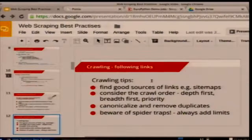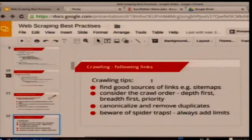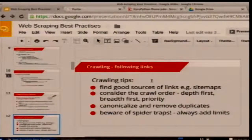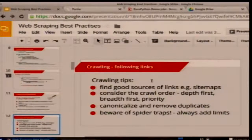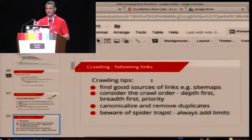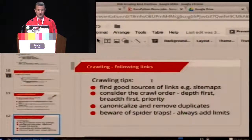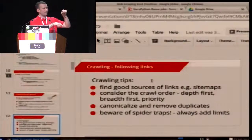Some tips for crawling: find good sources, and consider using sitemaps — Scrapy has a sitemap spider that makes this very easy and transparent. It can be a much more efficient way to get to content. Don't follow unnecessary links — you can waste an awful lot of resources. Consider crawl order: if you're discovering links on a website, it might make sense to crawl breadth-first and limit the depth, to help you avoid crawler traps like repeatedly scraping a calendar going through all the dates.